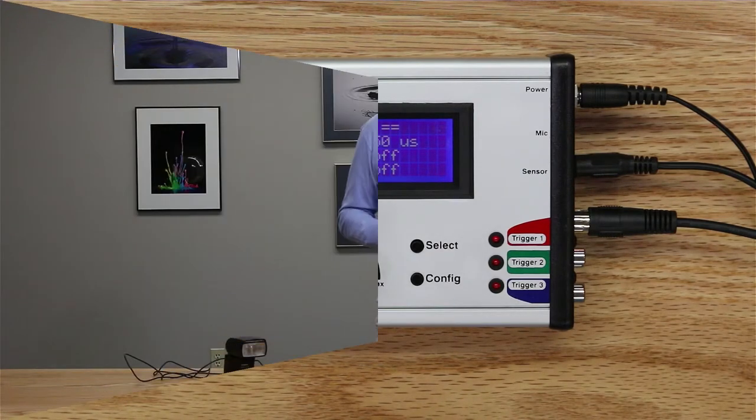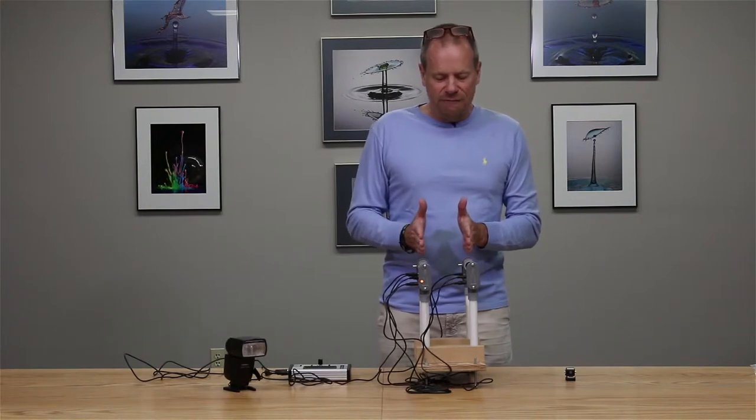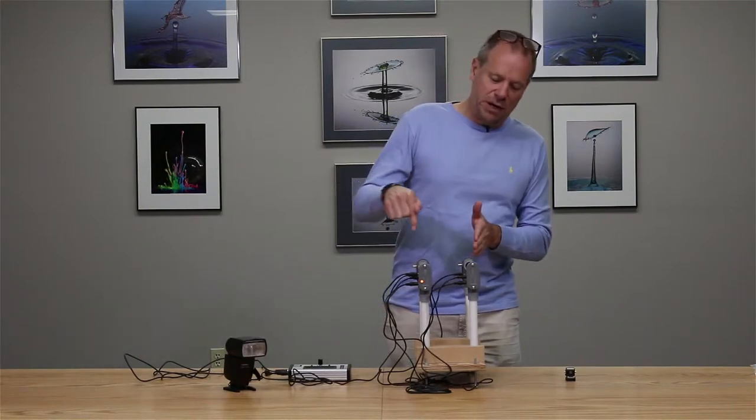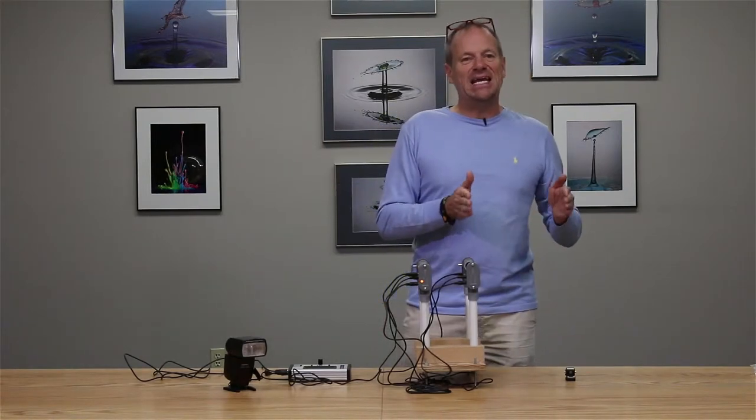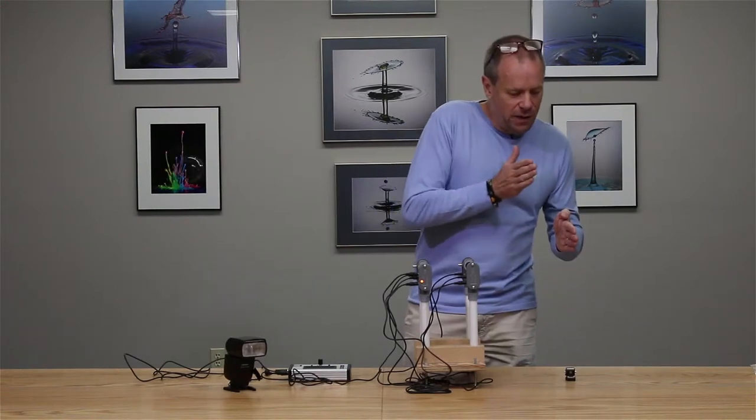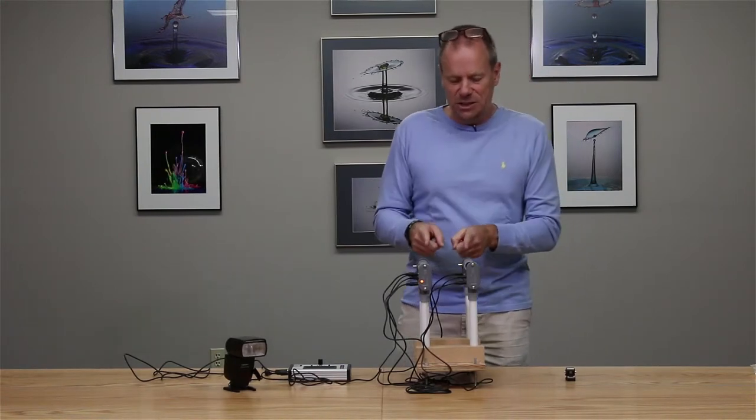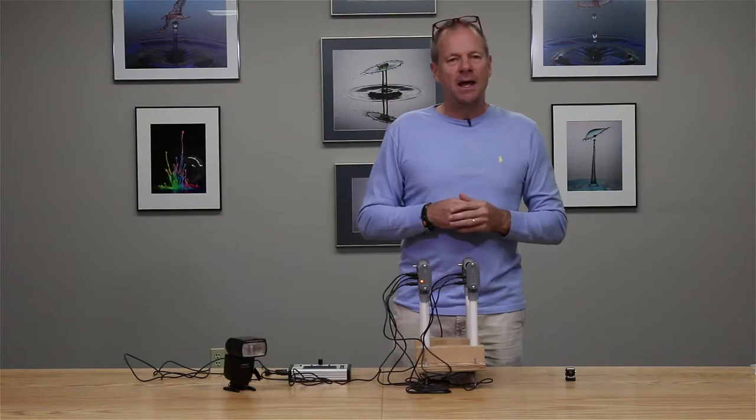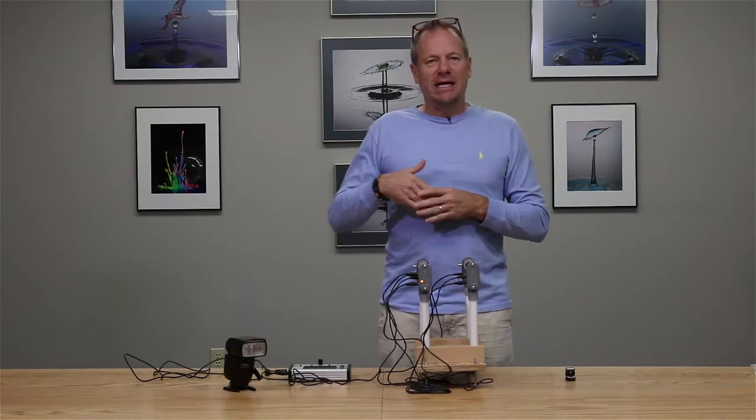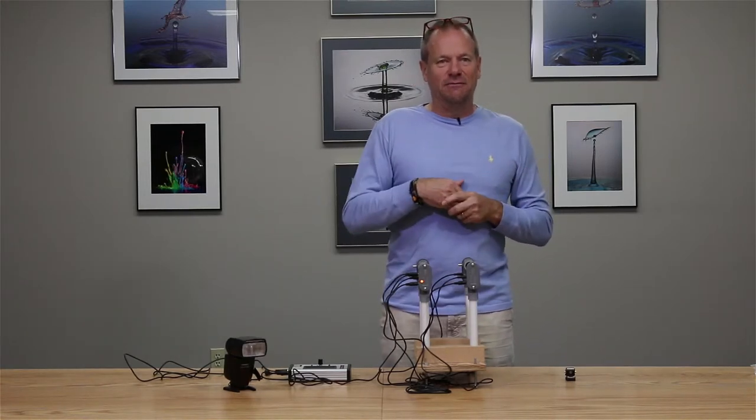And now we will have a multiplier of two on that ballistics output channel. What happens then is every time the projectile breaks the second beam, 10 inches later the flash will fire. It multiplies this distance by two and it's regardless of the velocity of what's actually going through the beam.